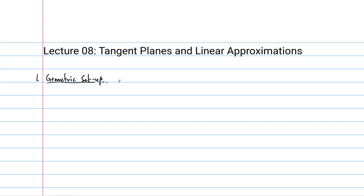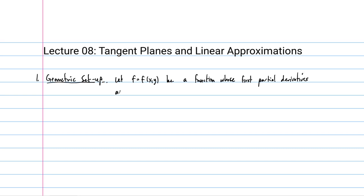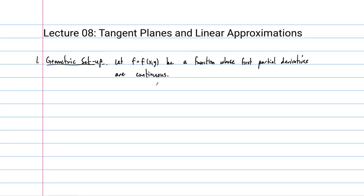For this lecture we want to continue to assume that we have a function f of two variables. So let's let f equal f of xy be a function whose first partial derivatives — that we studied in the last lecture — are continuous. And we also want to consider the graph of this function. The first partial derivatives being continuous means that the graph is pretty nice.